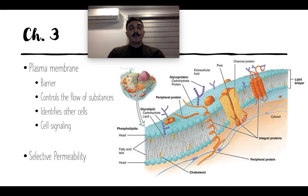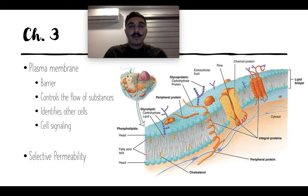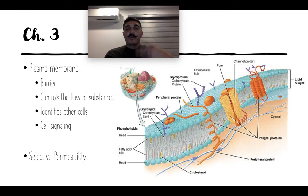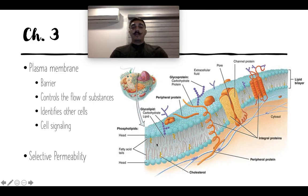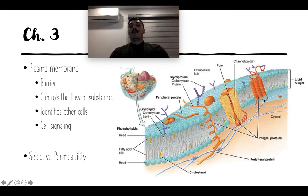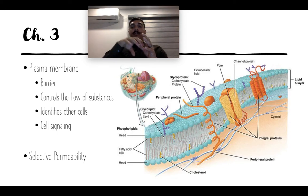Now we're getting into chapter three — cells. The plasma membrane is a pretty big deal. It's a phospholipid bilayer — two layers. The hydrophobic sides act like a wall for water, selecting when water moves in or out and keeping all the organelles inside the cell. The plasma membrane serves as a barrier for things trying to get into our cells that aren't supposed to, and controls the flow of substances.